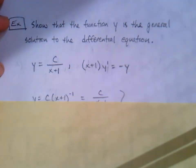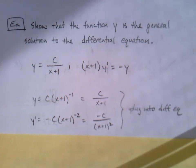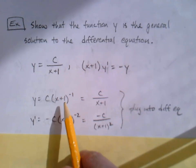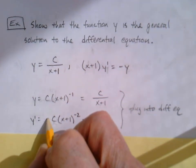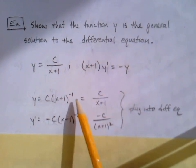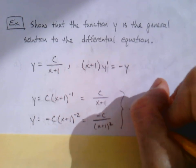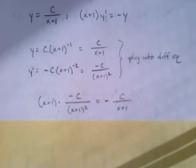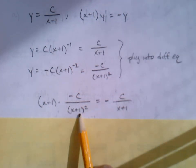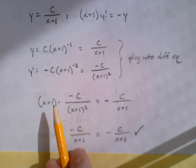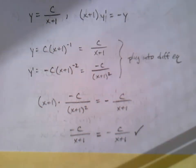It's helpful to rewrite Y as a quantity (x plus one) to the negative first before taking the derivative, so the derivative is a little cleaner: negative C times (x plus one) to the negative two. When plugging in, I find it easier to go back and rewrite as fractions. I plug in Y prime and Y, and one of the (x plus one) terms cancels, confirming they are equal. Check mark — verified.